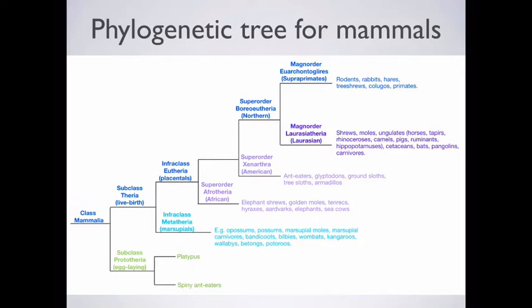If we look at the American super order, the zenatha, ant eaters, your glyptodons, those of you who are into your dinosaurs, ground sloths. So glyptodons and ground sloths are extinct. Tree sloths, remain, armadillos and ant eaters, the other ant eaters. They are all in that group. And then the remaining group is the super order borotheria, your northern group. And they are divided into two groups, your super primates and your laurasians. Laurasians coming from the continent of Laurasia, which is when the northern and southern continents split from each other. So you've got Gondwanaland in the south and Laurasia in the north.